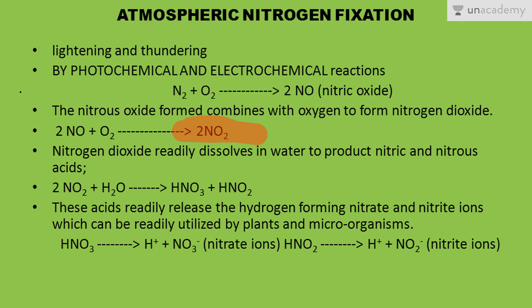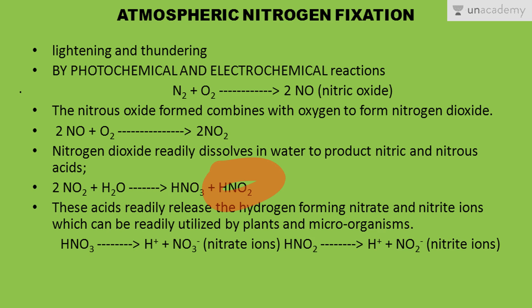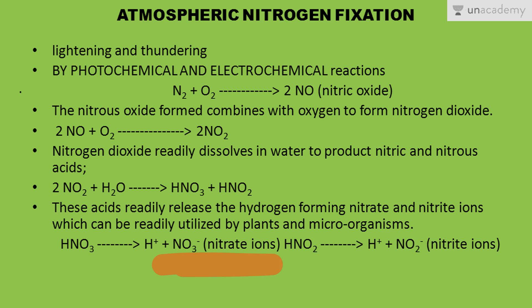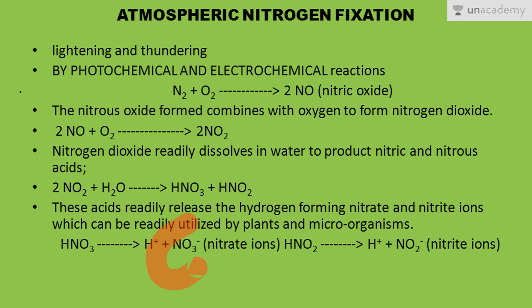Nitrogen dioxide then reacts with water molecules to give nitric acid and nitrous acid. These acids lose hydrogen ions to form nitrate and nitrite respectively — nitric acid yields nitrates and nitrous acid yields nitrites. These nitrates and nitrites can be used by plants, unlike molecular nitrogen. This completes atmospheric nitrogen fixation.